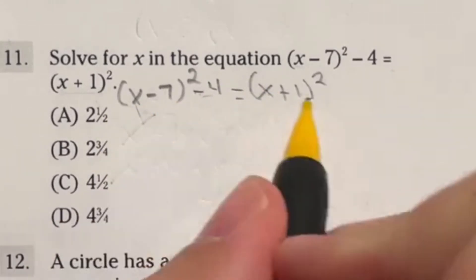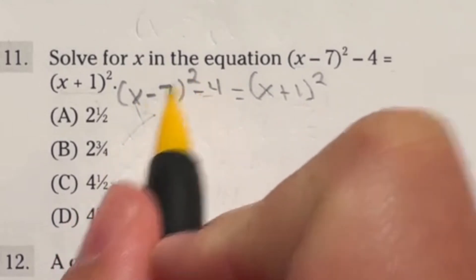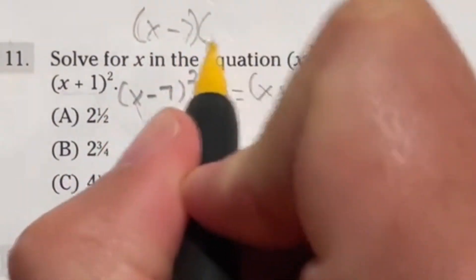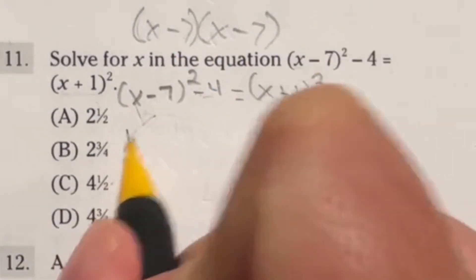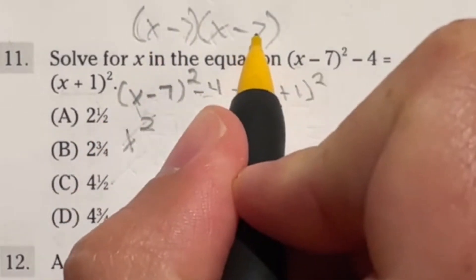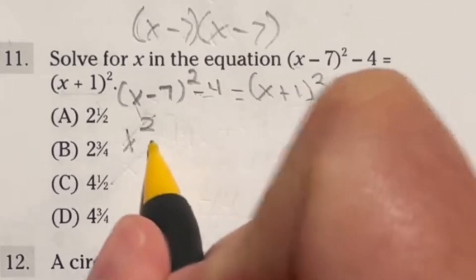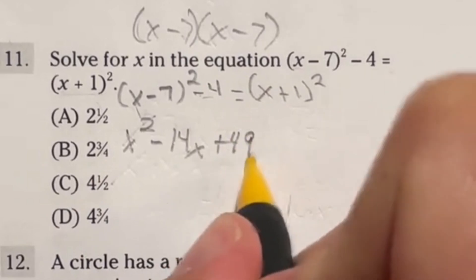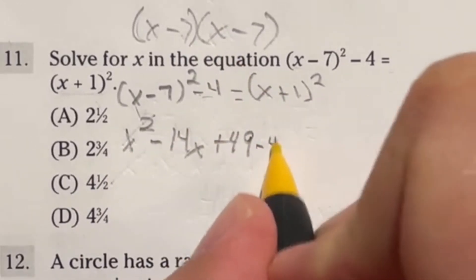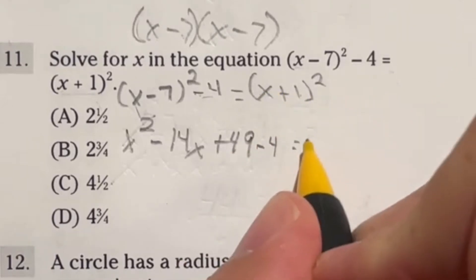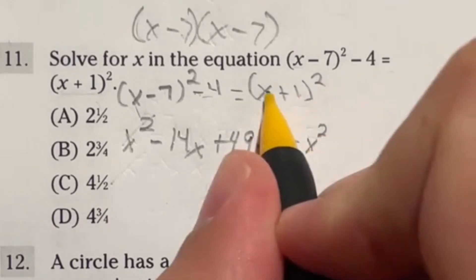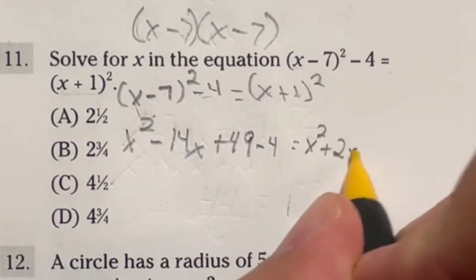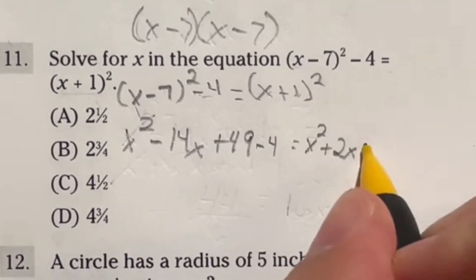So first thing we're going to do is expand these x minus 7 squared. So essentially we're doing x minus 7 times x minus 7. So x times x is going to give me x squared, x times negative 7 is negative 7x plus another negative 7x for a negative 14x. Then we got negative 7 times negative 7 which is a positive 49. We still have that minus 4. Then over here, again x times x is x squared, 1x, and another one for a second x, so that's plus 2x. And then 1 times 1 is just going to be 1.